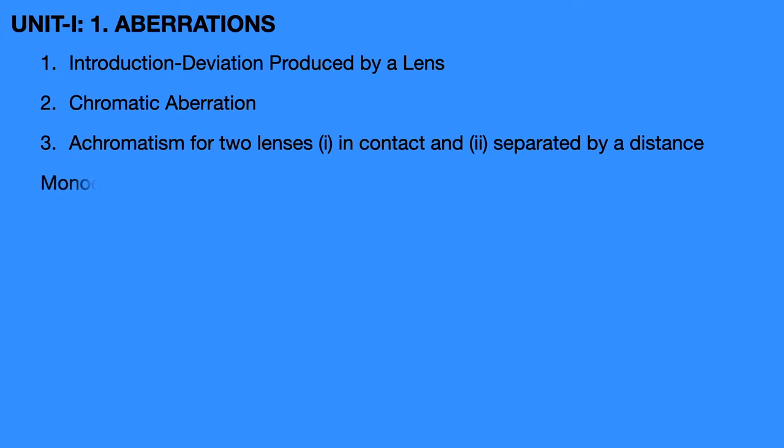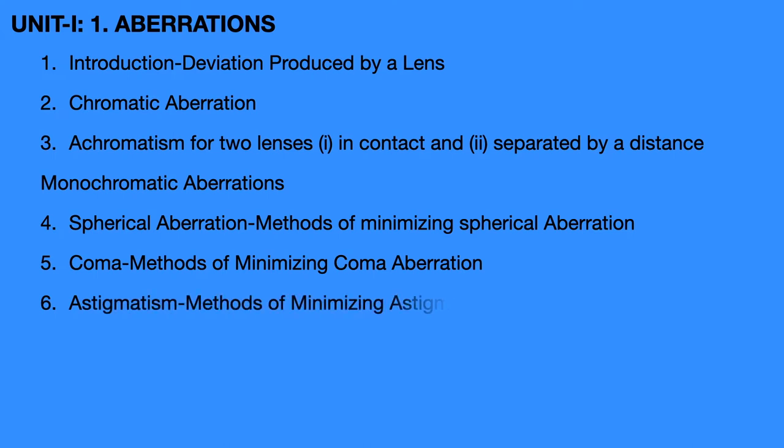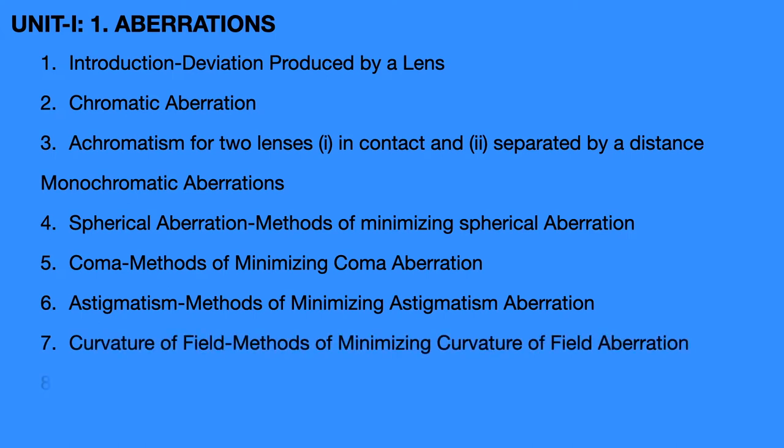Next, Monochromatic Aberrations. In monochromatic aberration, the fourth topic is Spherical Aberration, in which we will discuss methods for minimizing spherical aberration. Fifth, Coma and methods for minimizing coma. Sixth, Astigmatism and methods for minimizing astigmatism. Seventh, Curvature of Field and methods for minimizing curvature of field. Eighth, the last topic, Distortion and methods for minimizing distortion.